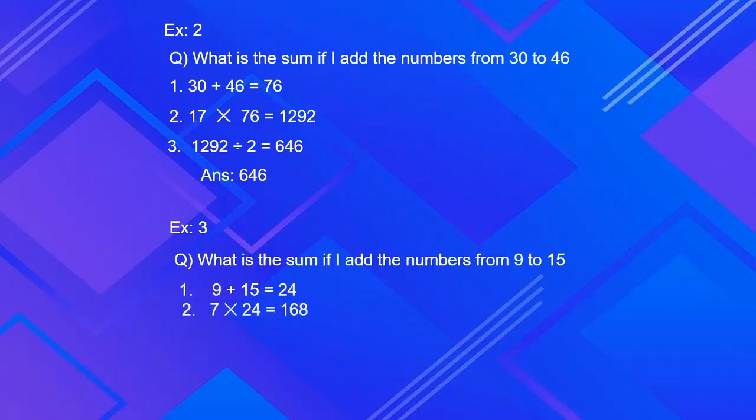Second step is to multiply the result by the amount of numbers in the group. So 7 times 24 which is 168.